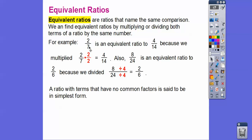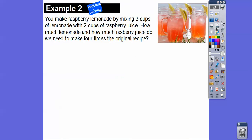A ratio with terms that have no common factors is said to be in simplest form. Two-sevenths is in simplest form, but two-sixths is not, because that can reduce further to one-third.